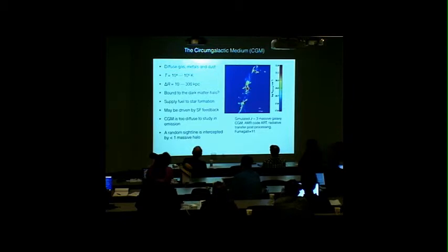Star formation in galaxies requires continuous supply of fuel, and this fuel is accreted from the CGM. And in turn, the CGM has physical properties driven by star formation feedback.